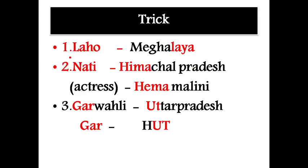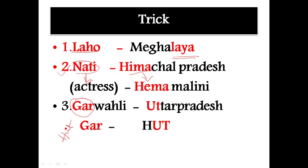Additional dances: Lahoh is the famous dance of Meghalaya — the last four letters of Meghalaya, 'laya', sound similar to 'Lahoh'. Nati is the famous dance of Himachal Pradesh — 'Nati' means actress, reminding us of Hema Malini, a famous actress. Garhwali is a dance of Uttarakhand — 'Garh' means hut, similar to Uttarakhand's UP prefix, and both point to the same region.